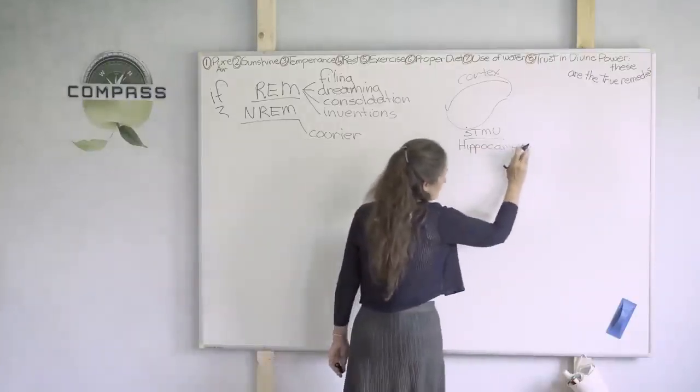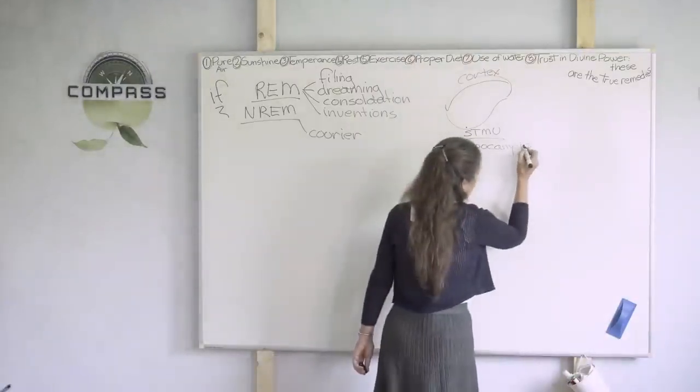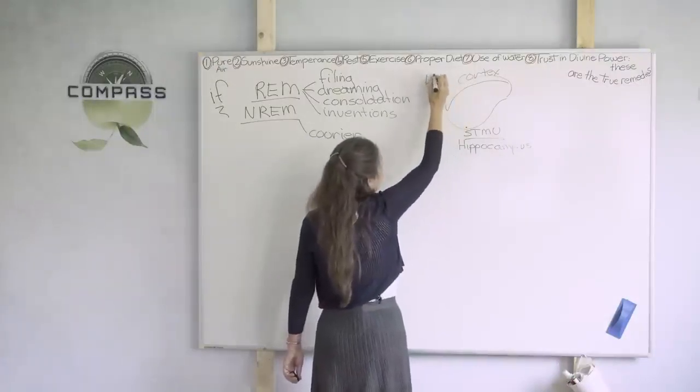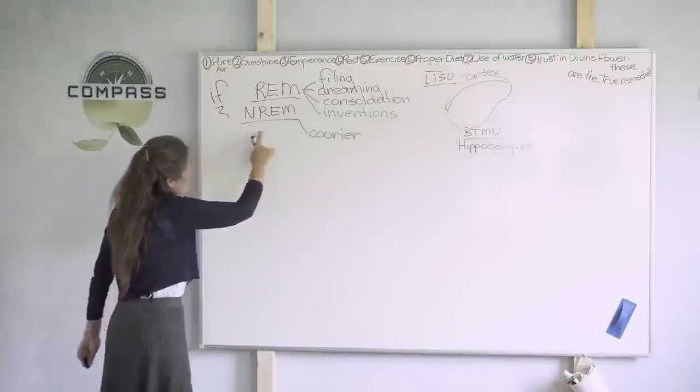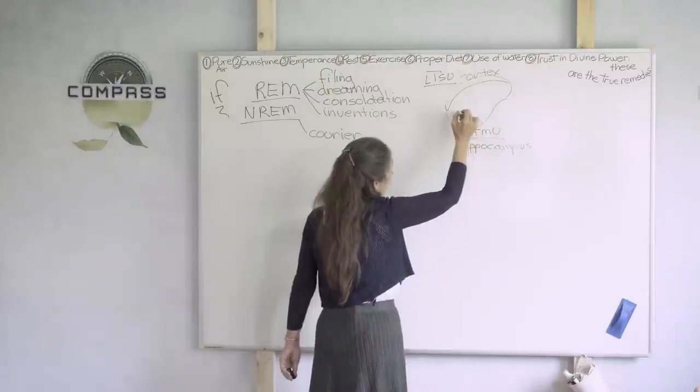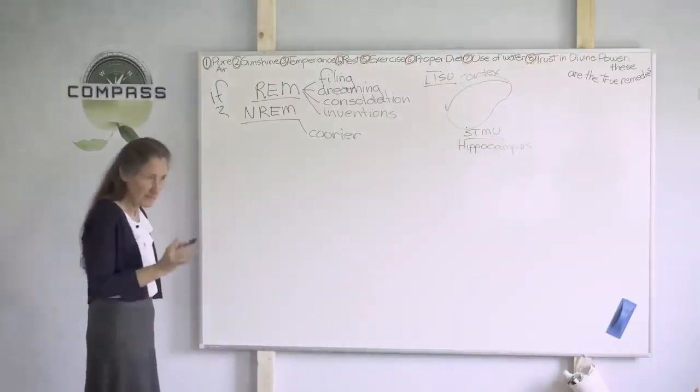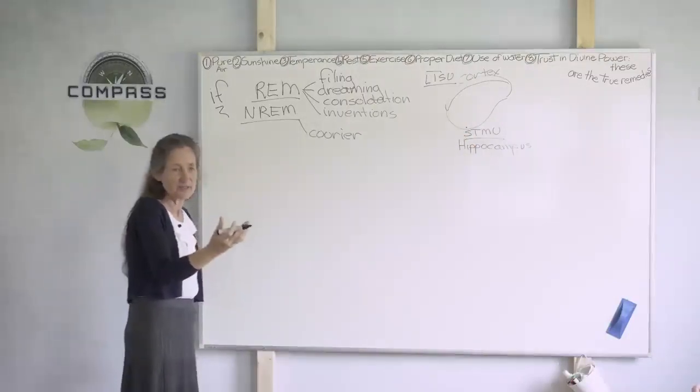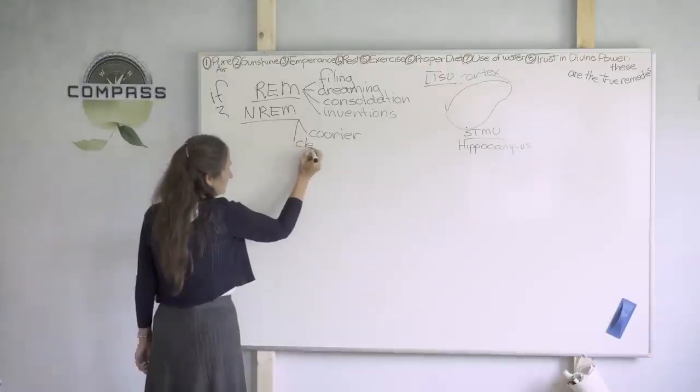Vse kar se dogaja skozi dan se hrani v hipokampusu, se pravi oddelek za kratkoročni spomin, ki ga imenujemo tudi hipokampus. Tu zgorej na sredini korteksa pa je oddelek za dolgoročni spomin. Torej v času ne-REM faze pride do kurirja, ki prenaša spomin iz kratkoročnega spomina v dolgoročni spomin. To je zelo pomembno, da se to sprazni čez dan, zato da je naslednji dan lahko, da imamo prazno spominsko kartico za spomine tistega dne.